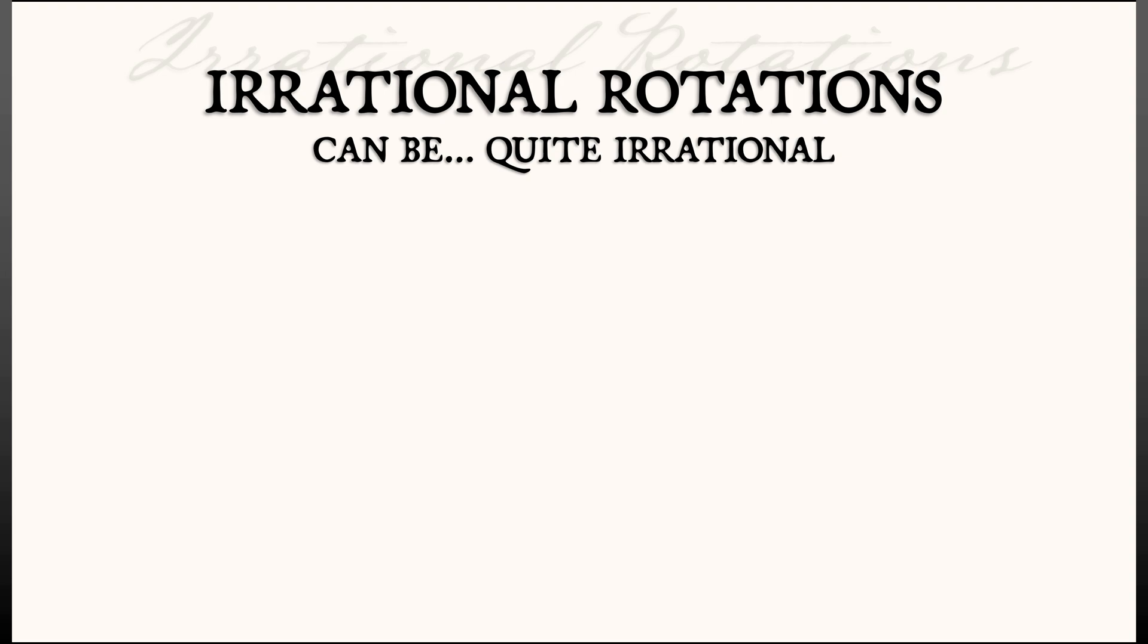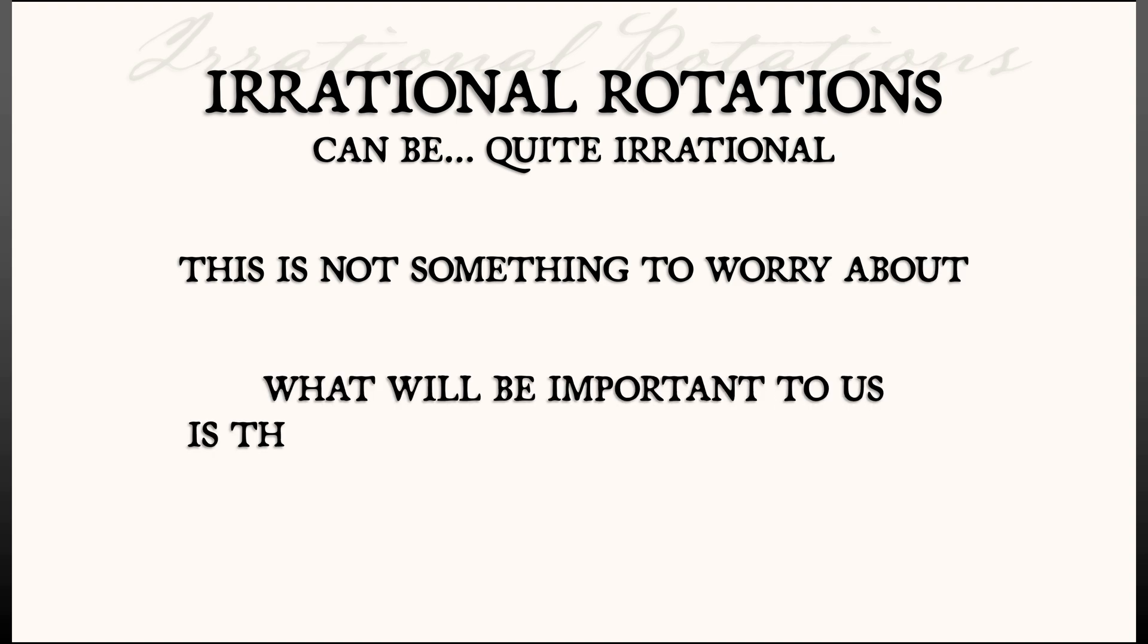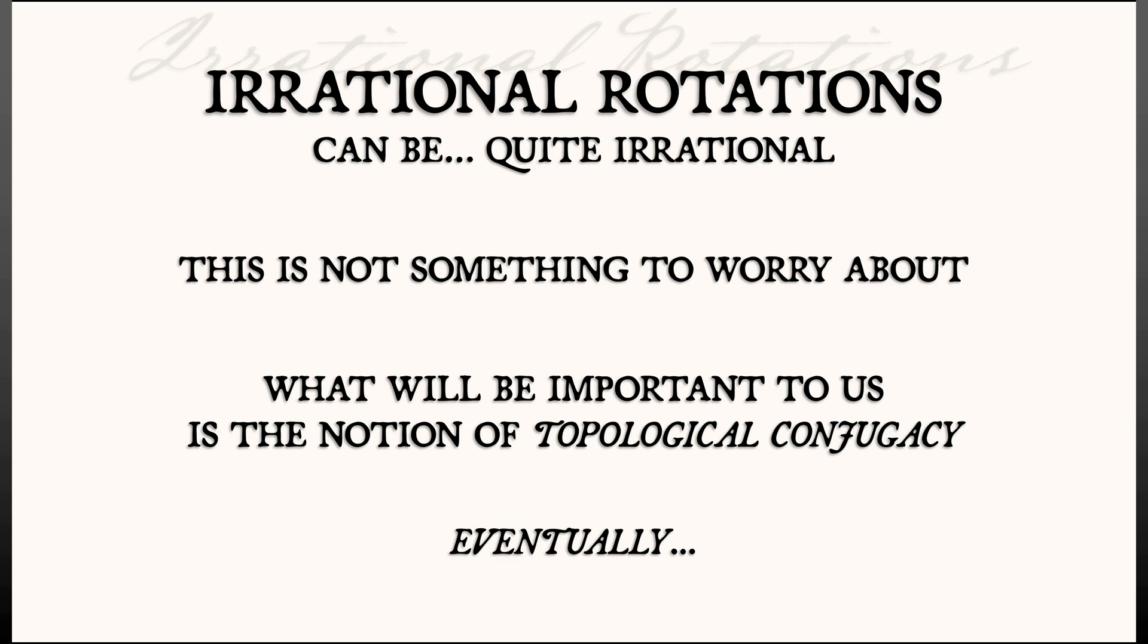you may or may not be able to get a smooth topological conjugacy. And that is what makes this subject of irrational rotations so irrational. This is not something to worry about. This is bonus material, we're just having a little bit of fun here. But what is going to be important to you is this idea of equivalence between dynamical systems, this notion of topological conjugacy. But we don't need that quite yet. This is just bonus material.